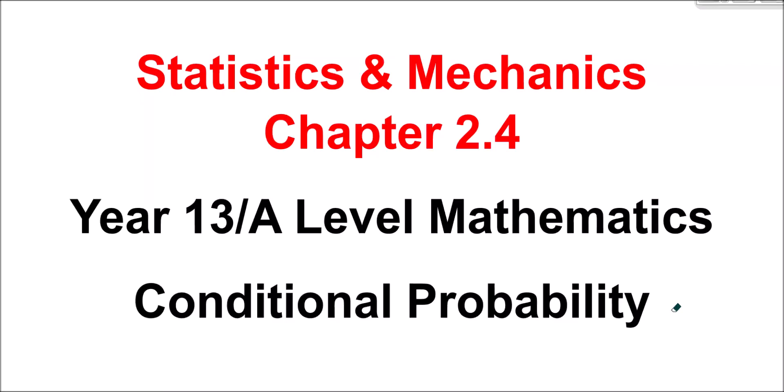Welcome to the penultimate video, the fourth of five, on conditional probability for A-level Edexcel maths. We've had a look at different regions of Venn diagrams and conditional probabilities — A given B, B given A — and now I'm going to derive and then use some formulas which will make this work even easier as we go along to some deeper questions.